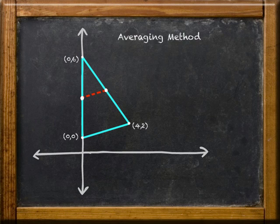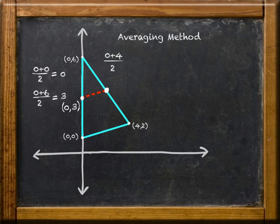...then we can find their coordinates using the averaging method. For this midpoint, I have (0, 3). For the other midpoint, I have (2, 4). Can you see how I got those?